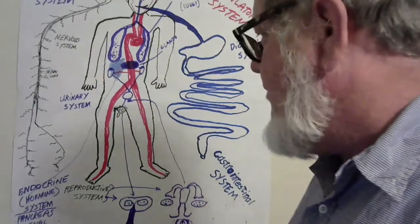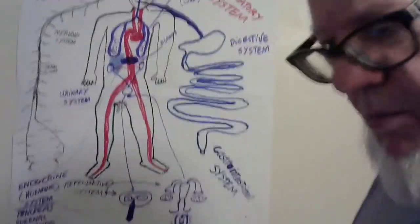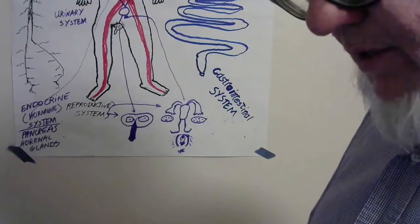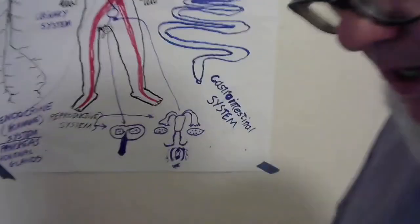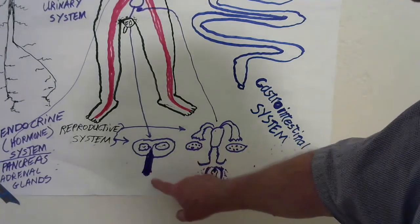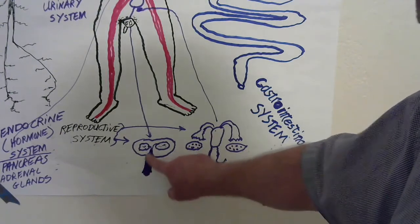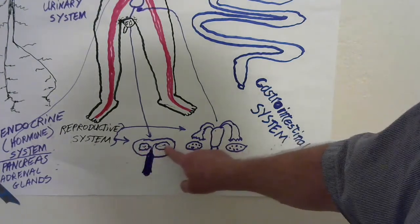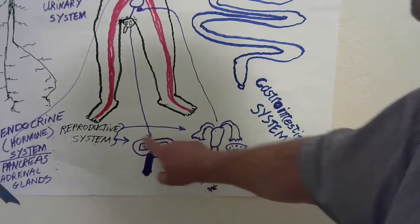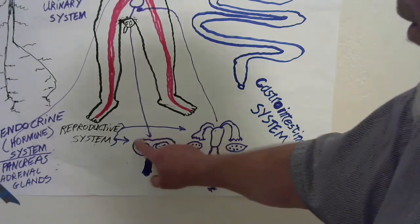We have our reproductive system. The reproductive system I have drawn separately and, admittedly, badly. This is the male reproductive system. It has the penis, the testes, and the scrotum, which is the bag or sack.